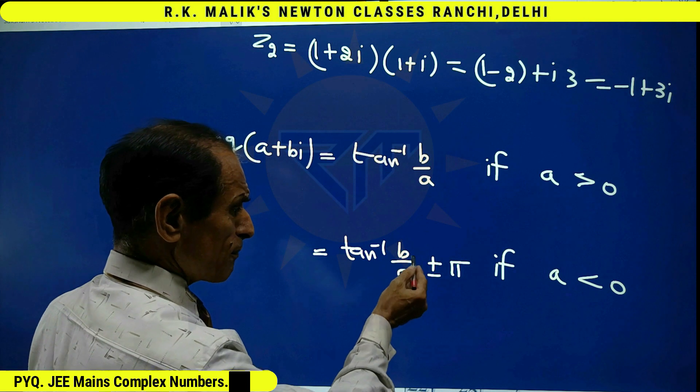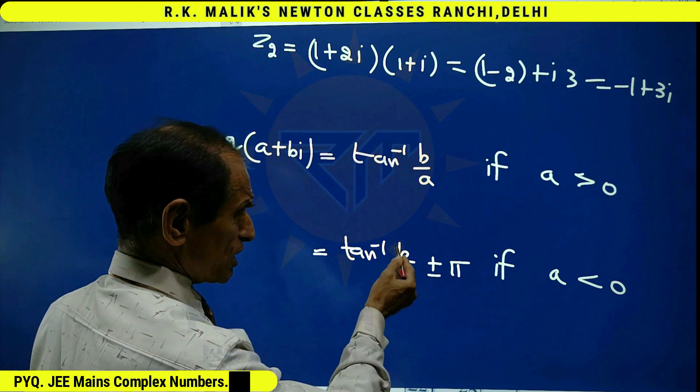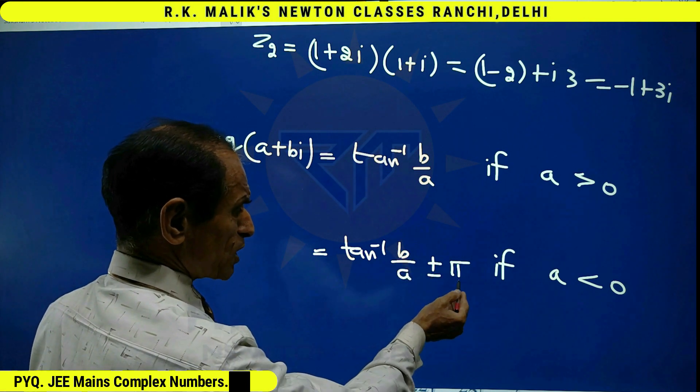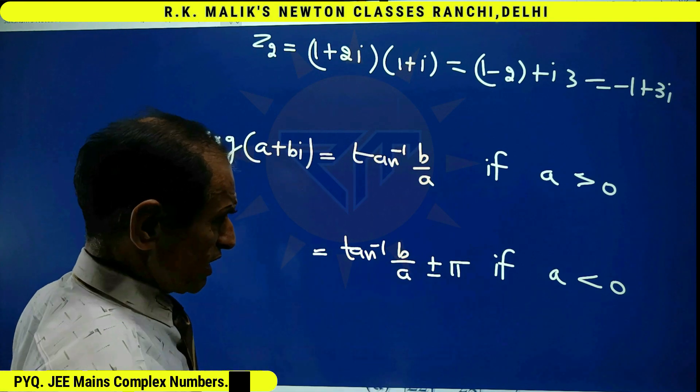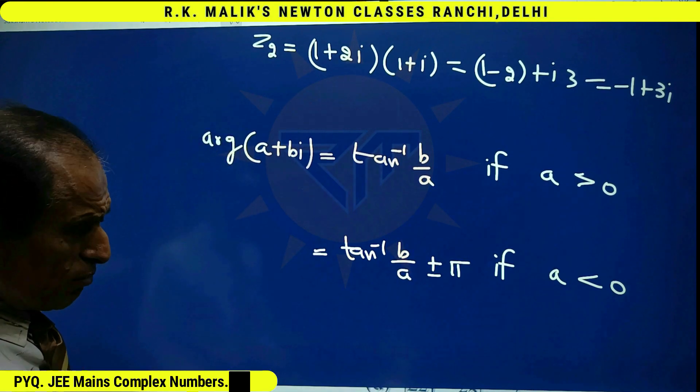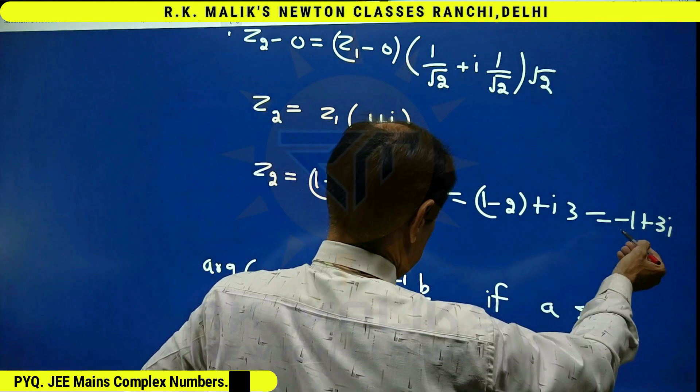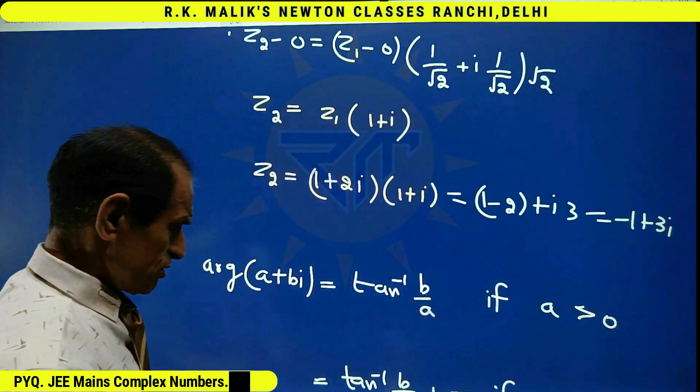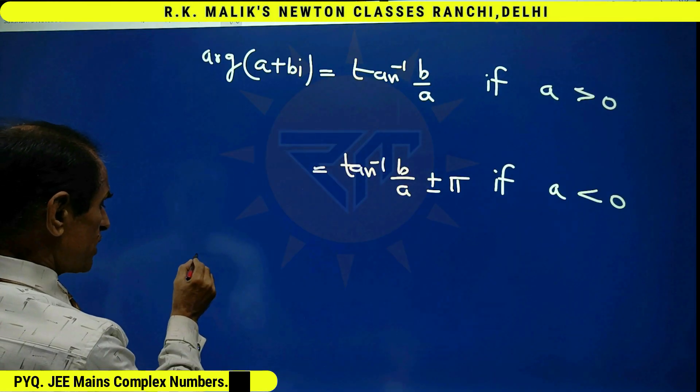If you don't know, remember this formula. Plus π will be used if b is positive. Minus π will be used if b is negative. You have to remember this formula. Here, it is clear that a is negative, b is positive.